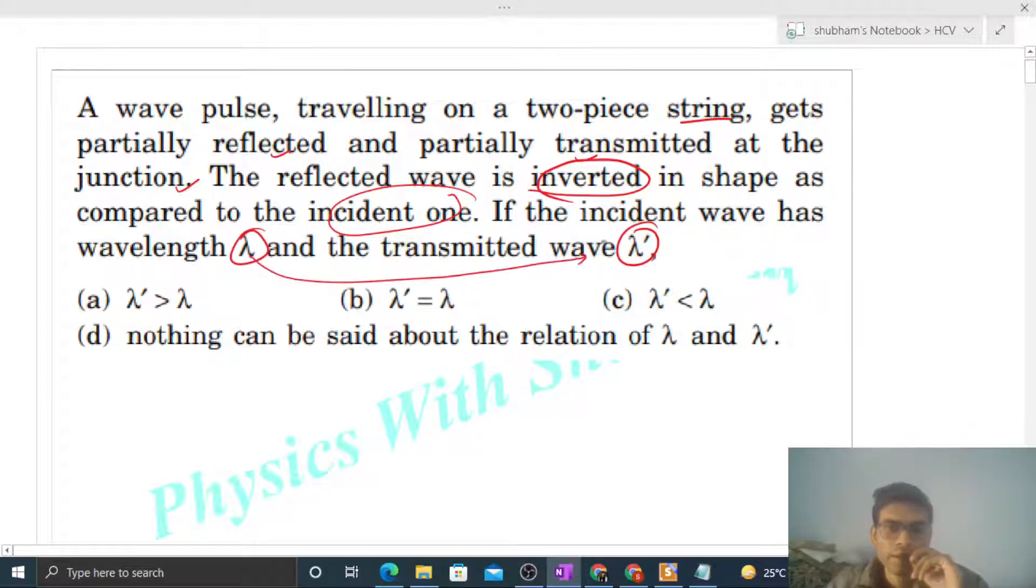So we have a two-piece string, something like this. Let's say yahaan pe yeh string A hai and yeh string B hai. And incident wave will be something like this. So yeh aapke paas incident wave hai.